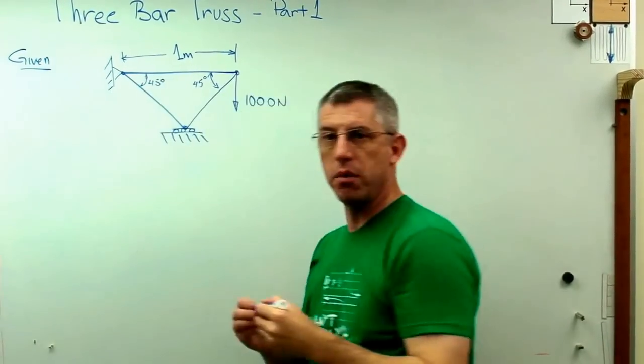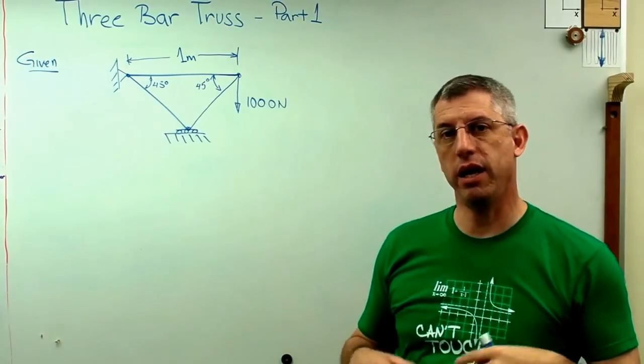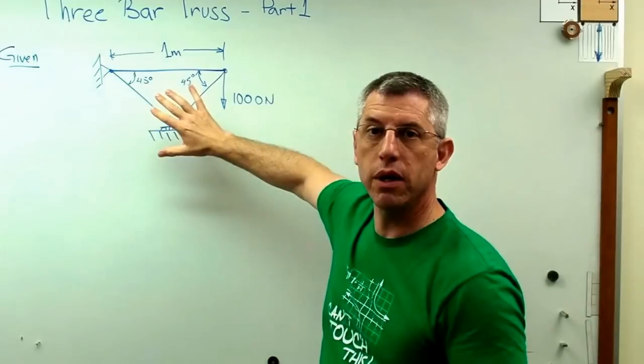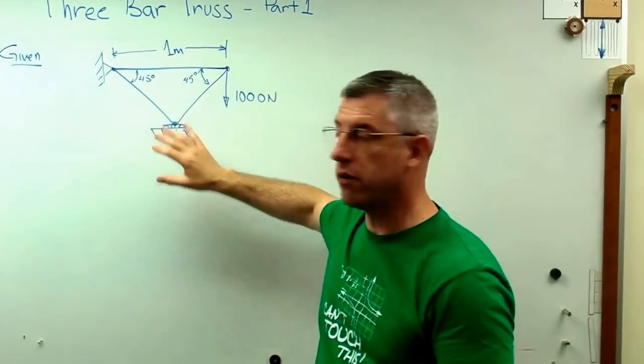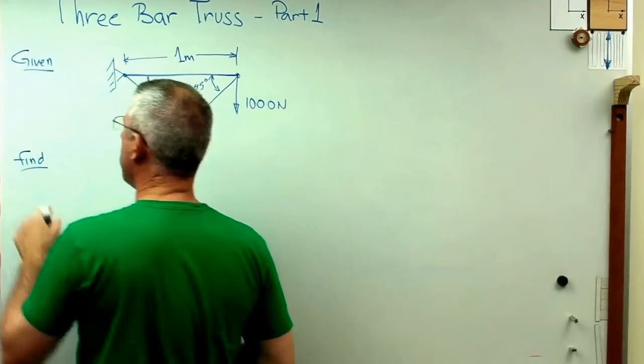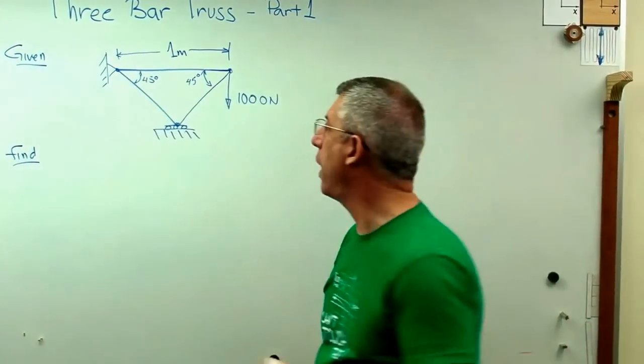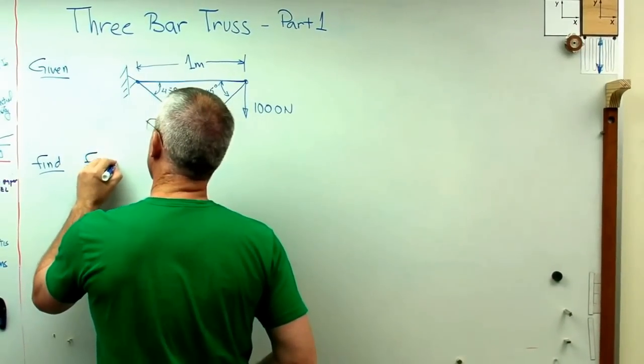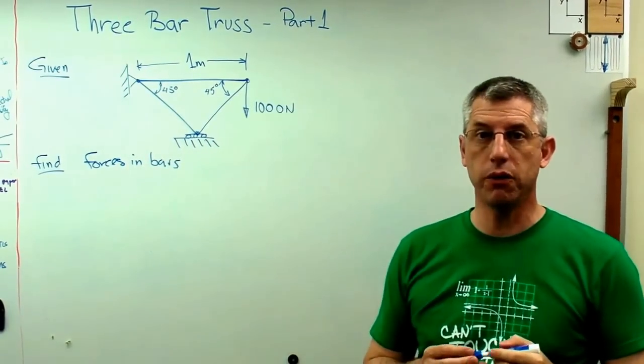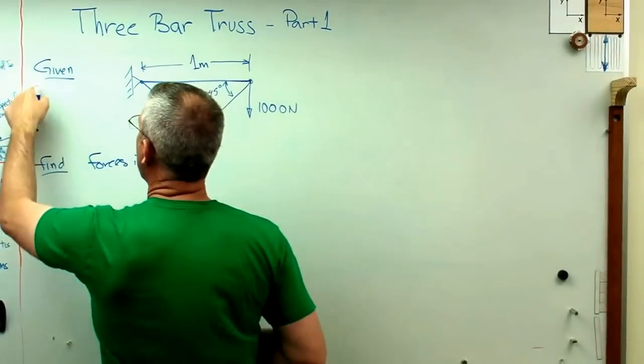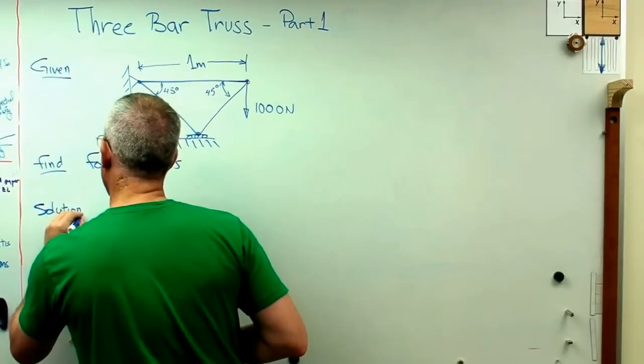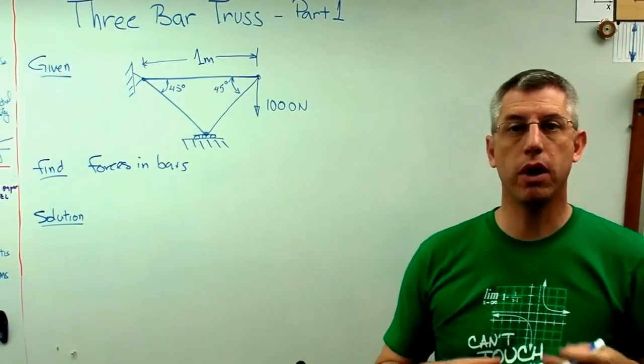One of the things I want to remind you about is there's something called GFSA and it's a format for solving problems. I'm going to write given, right, all the givens, everything that the problem statement includes, everything we know about the problem before we start. Then I'm going to write find. GF, find. What is it we're trying to find? Well, I'm going to try to find the forces in the bars. Now these are going to be internal forces. These are the forces that the bars actually feel.